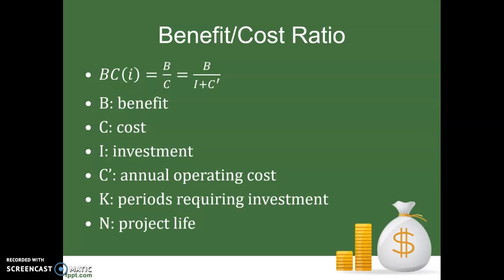A couple other variables: K is the number of periods requiring investment. Oftentimes that's just one — we spend all the money upfront in year zero to get the project started, then it's up and running and we start making revenue. But there are times where it may take multiple years, if you're building a big new factory or a highway system, before the project is ready to start operating. In that case K might be two, three, or more. N is the project life — however long we anticipate the project to last.